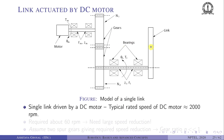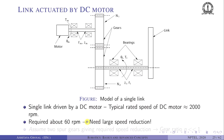We have a link driven by a DC motor. The typical rated speed of a DC motor is around 2000 RPM, but that is too fast. Typical required speeds are like 60 RPM, or about one rotation per second, which is 2π radians per second. For a 1-meter link, that is about 6 meters per second — still very fast — so we need a large speed reduction via a gearbox, giving a gear ratio much less than 1.